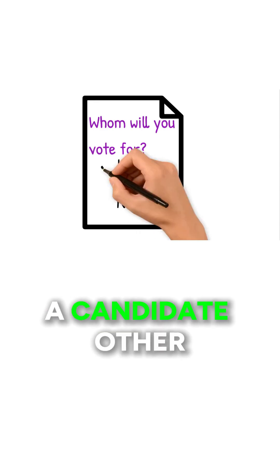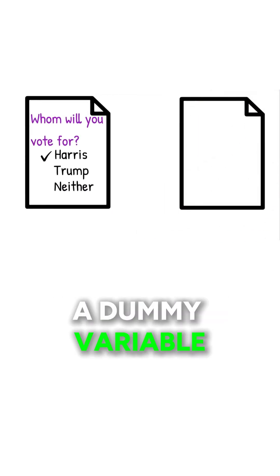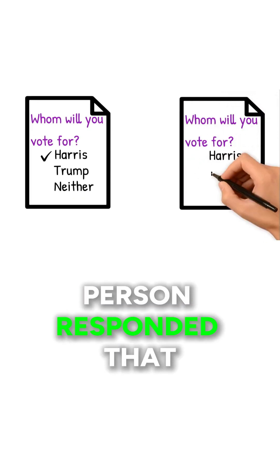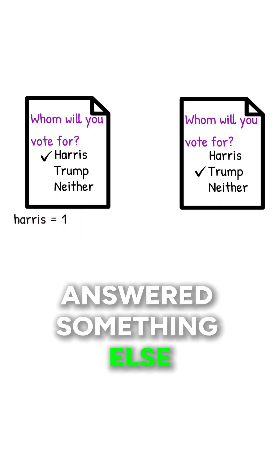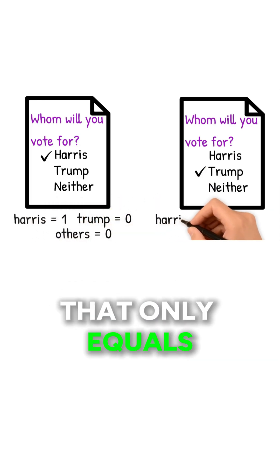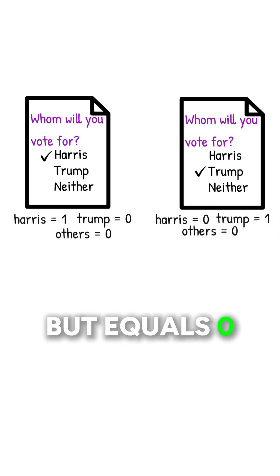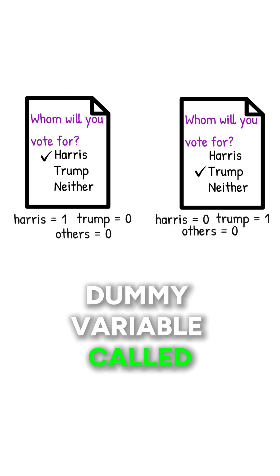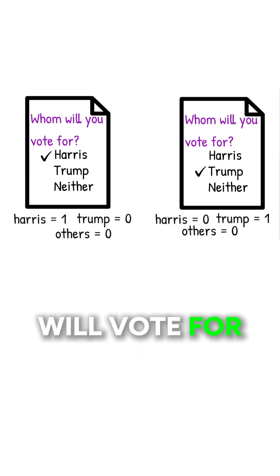For Donald Trump and a candidate other than Harris and Trump, you would create a dummy variable called Harris that only equals 1 if a sample person responded that they will vote for Harris, and equals 0 for everyone who answered something else. You would also create a dummy variable called Trump that only equals 1 if a sample person responded Trump, but equals 0 for all other respondents. And you would create a third dummy variable called Others that equals 1 if a person answered that they will vote for another candidate.